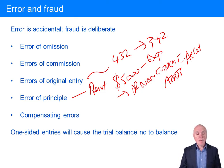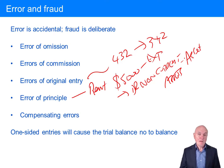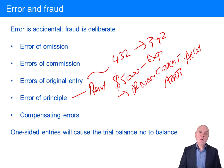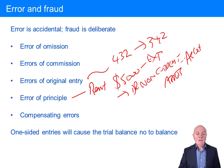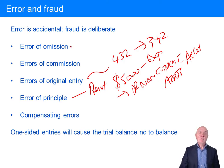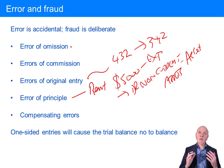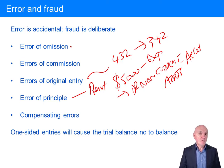Some errors can be one-sided, and if it's a one-sided error this will cause the trial balance to be out of balance. An error which maintains double entry going will never be picked up by the trial balance not balancing. For example, an error of omission where that invoice fell down the back of your desk is never going to cause something not to balance.